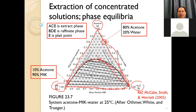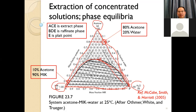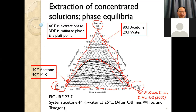For example, if we locate a point on this diagram: the acetone content reads about 80 percent, water is about 20 percent — because it's located on the acetone-water side line. For a point on the MIK-acetone side line, for example, that gives about 10 percent acetone and 90 percent MIK. That is how to read any point on this triangular diagram.